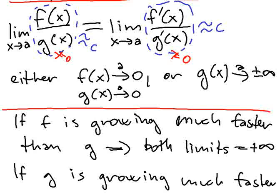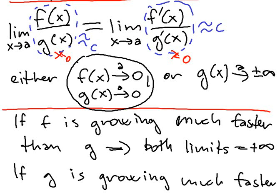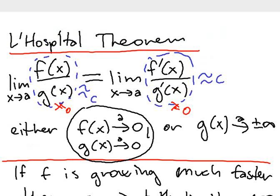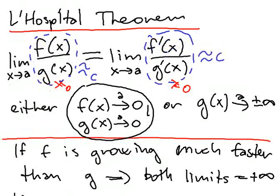If you want to prove this, you use Cauchy's mean value theorem. This should not be so difficult. If both functions are going to zero, then after some point both will be very small. Using Cauchy's theorem, you can state something: you know something about the derivatives and you would like to know something about the original function. This is a quite natural application of Cauchy's mean value theorem.